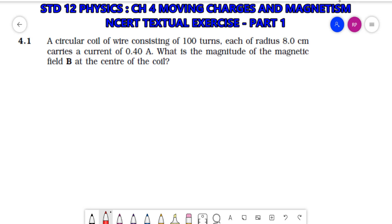Question 4.1: A circular coil of wire consisting of 100 turns, so N equals 100, each of radius 8 centimeters or 0.08 meters, carries a current of 0.40 amperes. What is the magnitude of magnetic field B at the center of the coil?